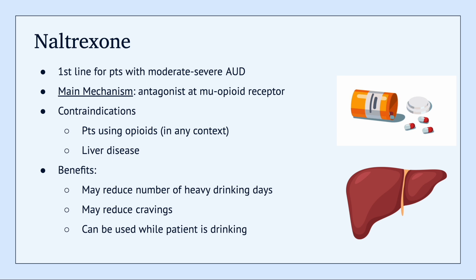We'll start off by talking about naltrexone. This is the first line for patients with moderate to severe alcohol use disorder. It works as an antagonist at the mu opioid receptor. Some contraindications to be aware of: it can't be used in patients who are using opioids in any context, whether through heroin or prescribed pain medication, and it's also contraindicated in patients with liver disease. Some important benefits are that it may reduce the number of heavy drinking days a patient experiences, it can help reduce cravings, and importantly it can still be used even while a patient is drinking — so even if a patient's goal is not to become completely abstinent from alcohol, it can still decrease the amount that they drink.